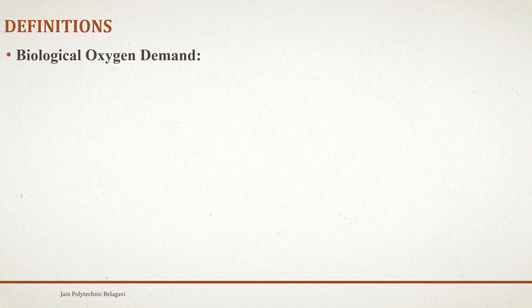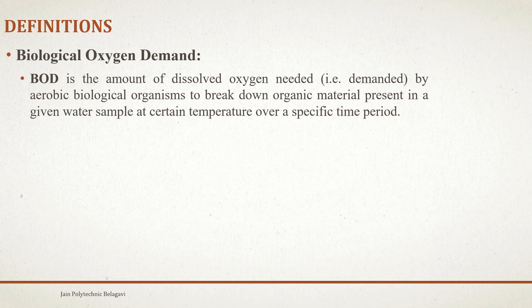Next we will understand Biological Oxygen Demand. There are two types of oxygen demands found in water analysis: Biological Oxygen Demand (BOD) and Chemical Oxygen Demand (COD). BOD is the amount of dissolved oxygen needed by aerobic biological organisms to break down organic material present in a given water sample at a certain temperature over a specific time period. This tells us how much oxygen is necessary for maintaining the water condition.